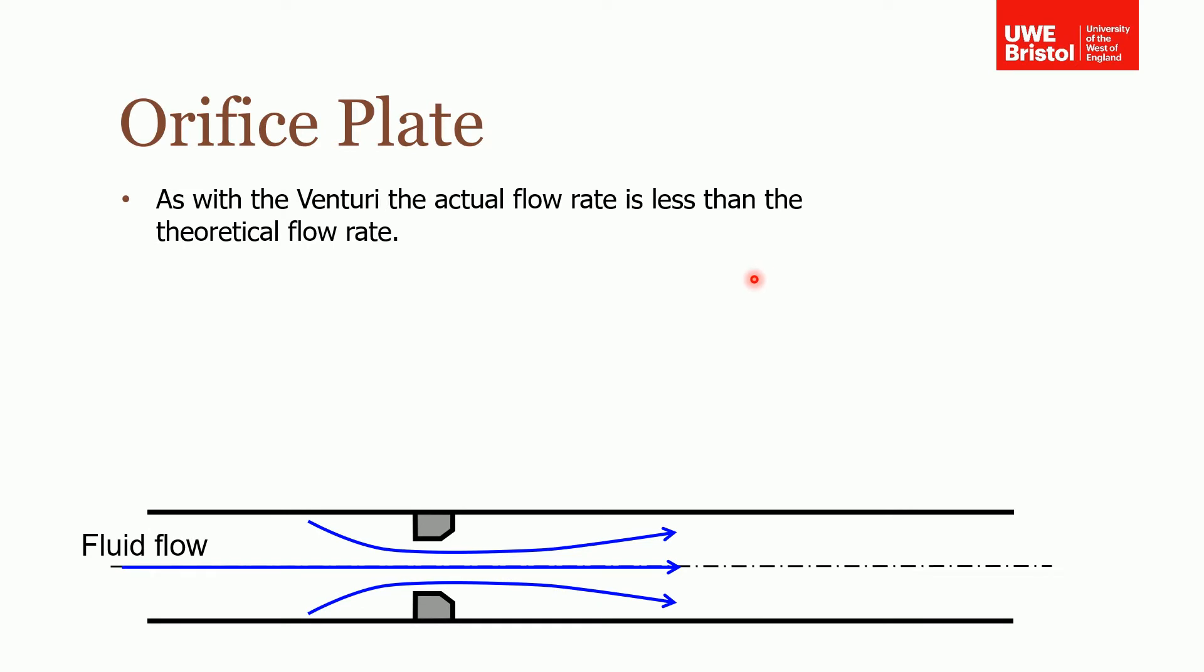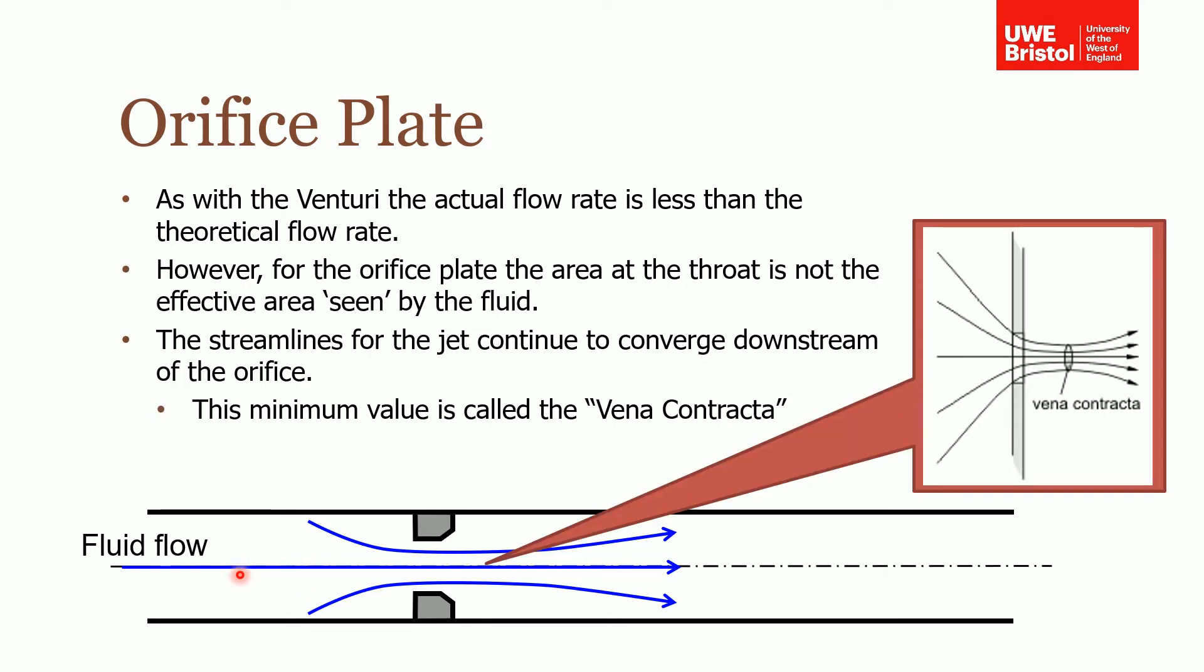However, unlike the Venturi the change in area is slightly different. We said with the Venturi the actual mass flow rate is less than the theoretical flow rate, and that is also true for this orifice plate. But it's even more of a factor for the orifice plate and this is due to the way that the flow flows through that hole.